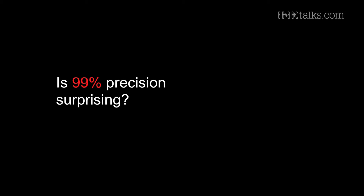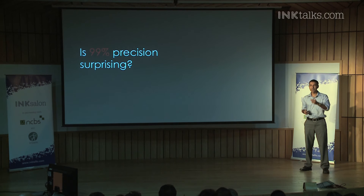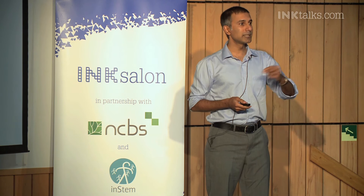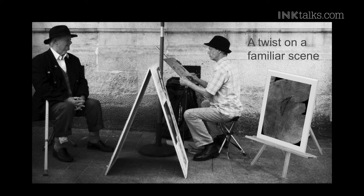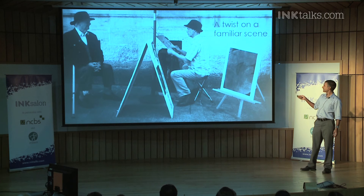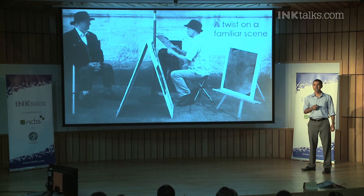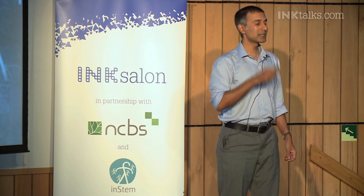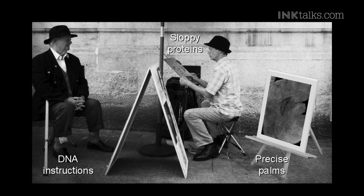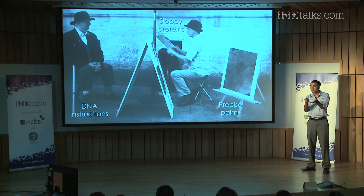So now I can ask: fine, we know life is 99% precise — is that surprising? Is that what you expected? Does it make sense? All we have done so far is make an observation and quantify it — we haven't yet done any science. To think about it, I'm going to bring up a metaphor. Here is a scene you see on many street corners: artists who sit and draw portraits of visiting tourists. Here is a painting the artist drew — a very detailed picture of somebody's palm. The twist is that the subject's palms are not visible, they're hidden. So the artist asks the subject to describe his palm: tell me what your palm looks like and I'll try to draw it. The subject is the DNA — the person giving the instructions. The artist who might mishear what you said, whose hand shakes, who doesn't have the right color of paint — that's the sloppiness of biology. Sloppy, random protein machinery — it works, but it is not completely precise.